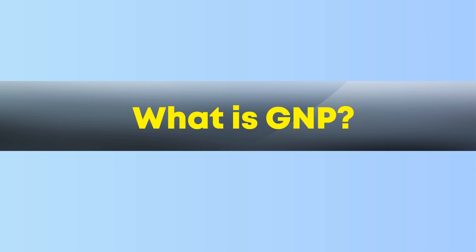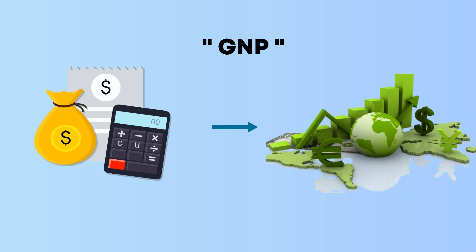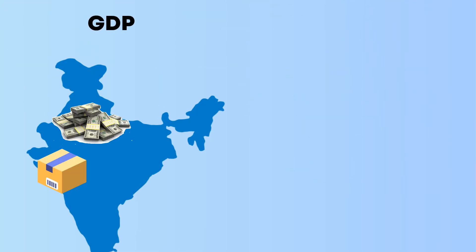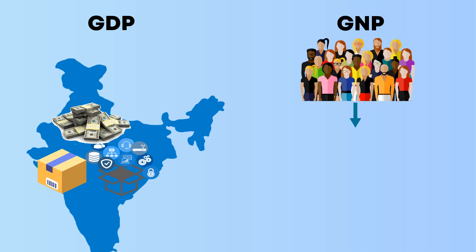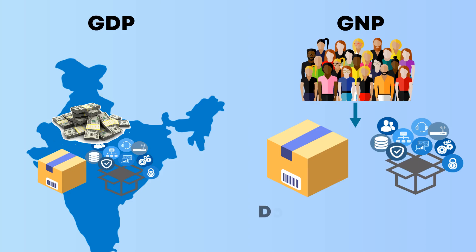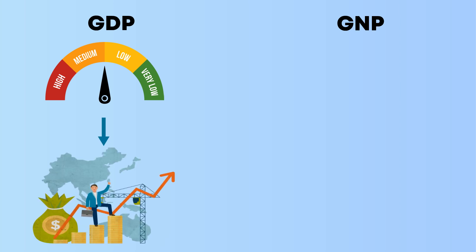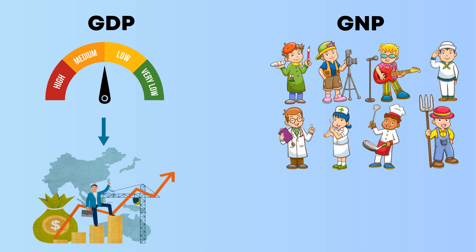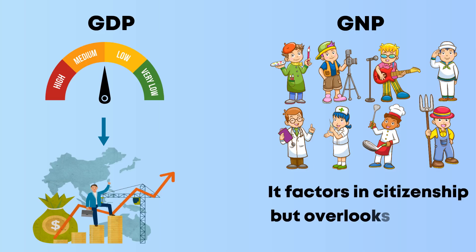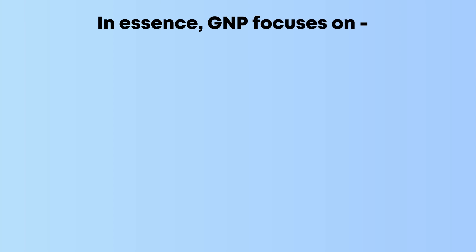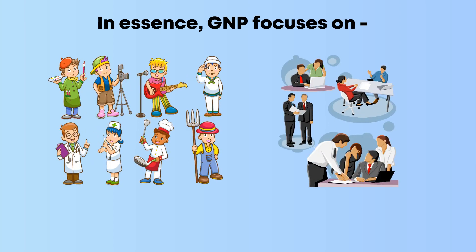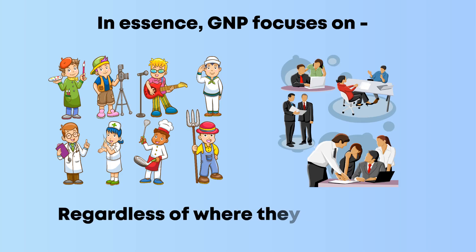GNP is another metric used to measure a country's economic output. Where GDP looks at the value of goods and services produced within a country's borders, GNP is the market value of goods and services produced by all citizens of a country, both domestically and abroad. While GDP is an indicator of the local or national economy, GNP represents how its nationals are contributing to the country's economy. It factors in citizenship but overlooks location. In essence, GNP focuses on the economic activities of a country's citizens or corporations, regardless of where they are located.